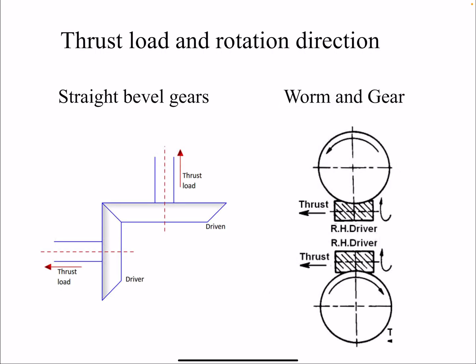Moving to bevel and worm gears — we have separate lectures for those. For the thrust load: the thrust load is always away from the point of contact, and the radial load is always toward the center. For gear two acting on gear three, and gear three acting on gear two, the tangential component can be identified by inspection.